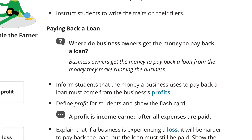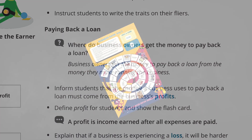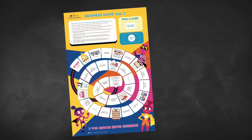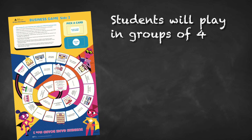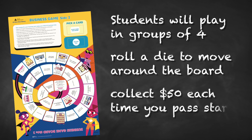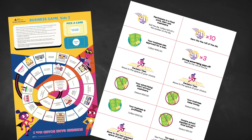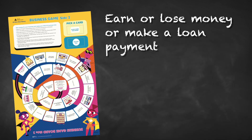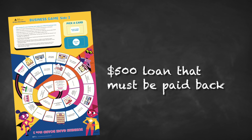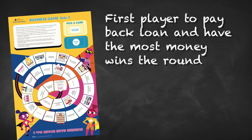Next, you'll transition to the topic of paying back a loan and introduce a board game. Students will play in groups of four and roll a die to move around the board. You collect $50 each time you pass start and pick a card when you land on a space with a picture of a business. Other spaces cause you to earn or lose money or make a loan payment. Everyone starts with a $500 loan that must be paid back with 10% interest. The first player to pay back his or her loan and have the most money wins the round.